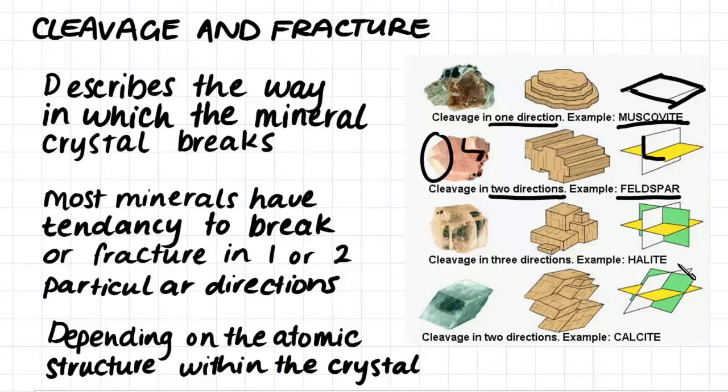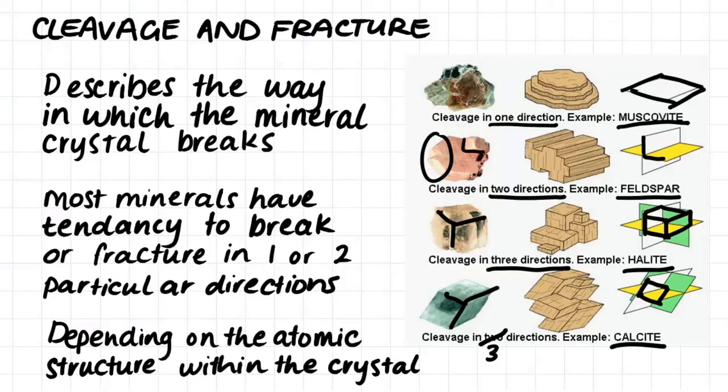Halite will break off in perfect cubes as it will break in three directions, all of which are at 90 degrees to each other. Here are our three directions: one, two, three. Calcite will also break off in three directions, but however these directions are at an angle to each other and we will end up with a rhombohedral crystal shape.